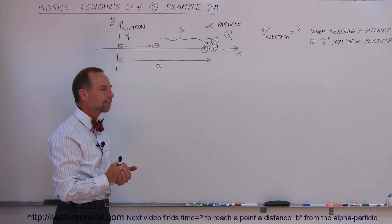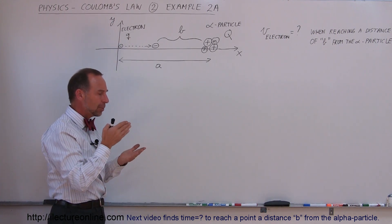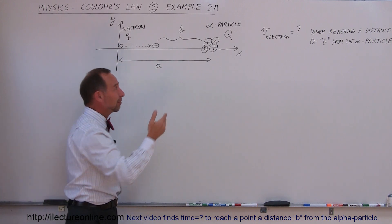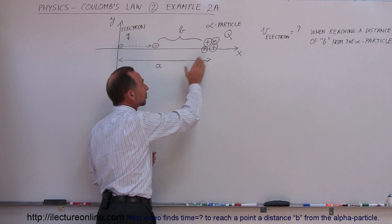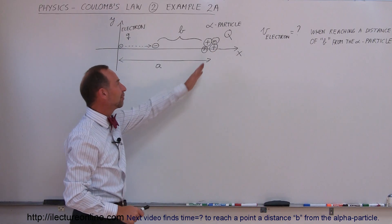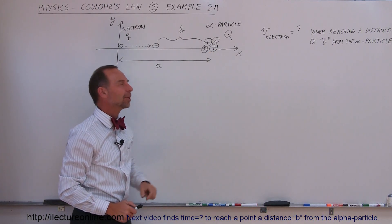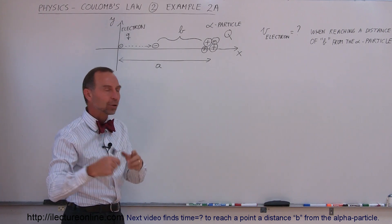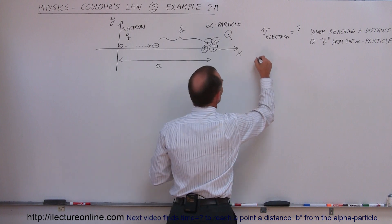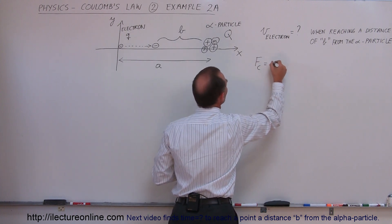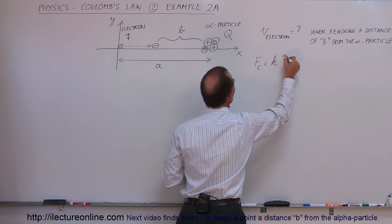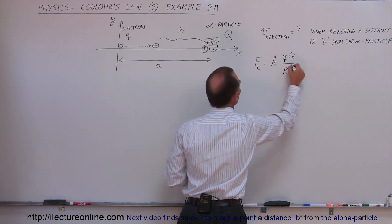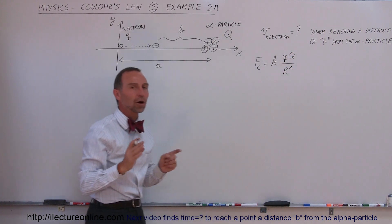How do we figure that out? Well, the alpha particle will of course be pulled towards the electron, but let's nail this particle down so that the alpha particle cannot move — that makes the problem a little bit easier. We know that the force between them is determined by Coulomb's Law: F = k times the charge of the electron times the charge of the alpha particle, divided by the distance r squared.